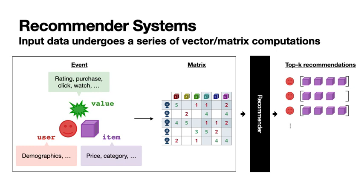In short, a recommender system is built on top of three different types of data: user, item, and value. Users are accompanied by some demographic information, and items have attributes such as price and category. Between users and items there must be some interactions. For example, on an e-commerce site, the event could be a purchase behavior — captured as a binary zero-one flag indicating whether a user purchased a given item.